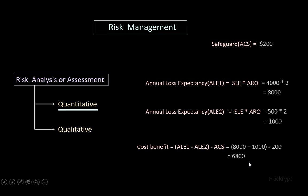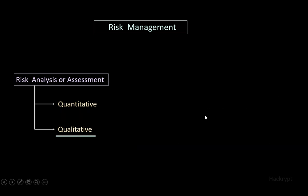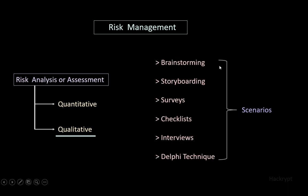Qualitative analysis is based on scenarios — if there is a vulnerability, what threat can happen and how much damage it can cause. Methods used include discussing in the form of stories, conducting surveys, going through checklists, conducting interviews, or using the Delphi technique, where anonymous feedback is gathered from group members.